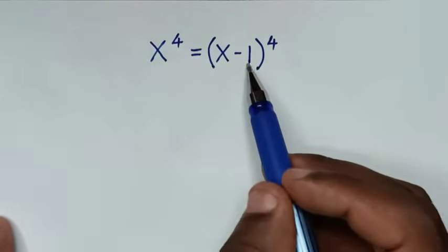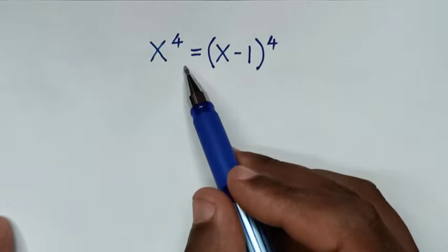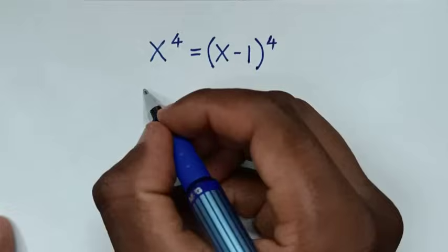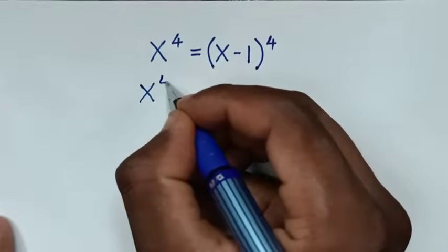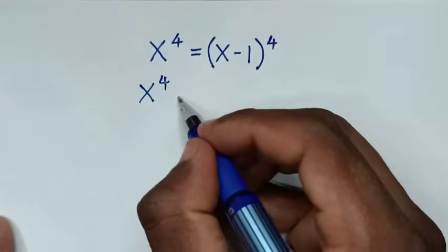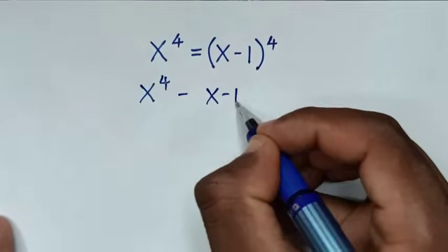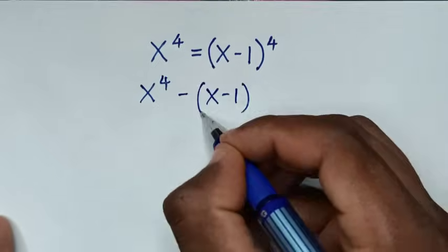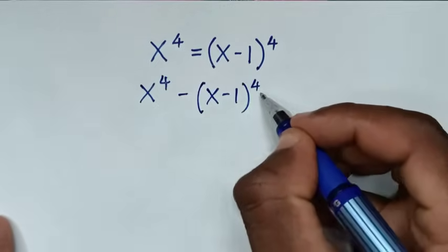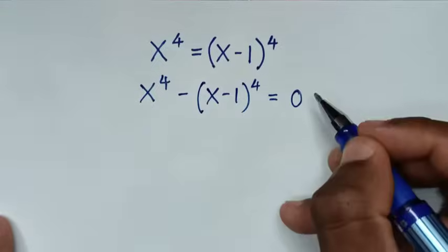In the first step, we take x minus 1 bracket power 4 to the left side. So it will be x power 4 minus x minus 1 bracket power 4 is equal to 0.